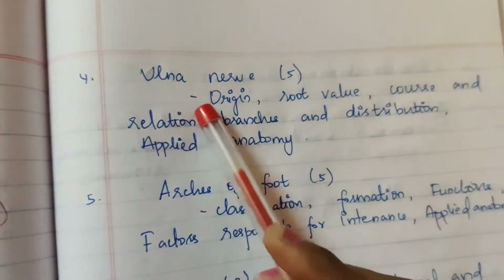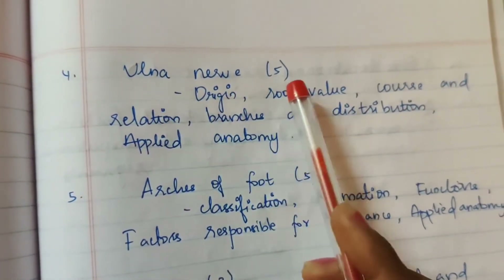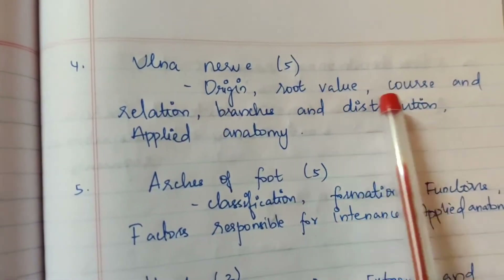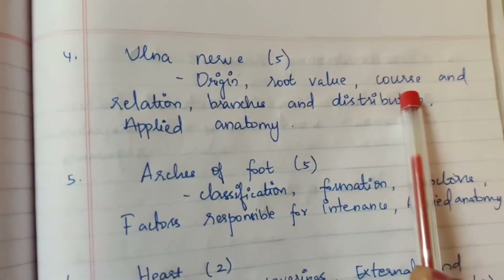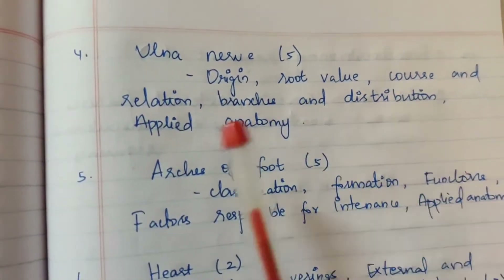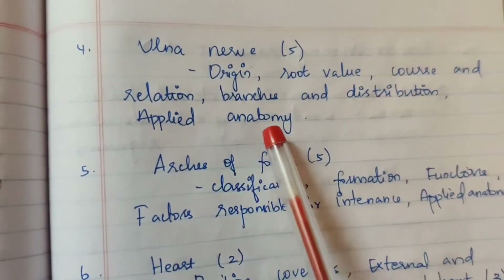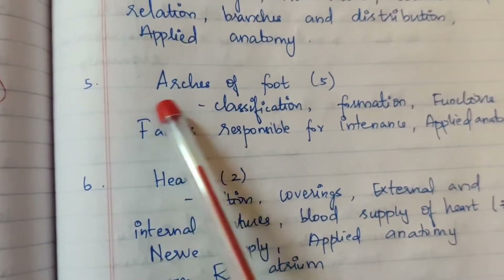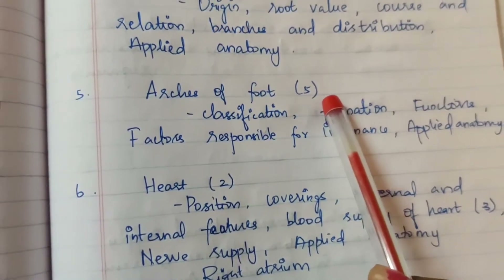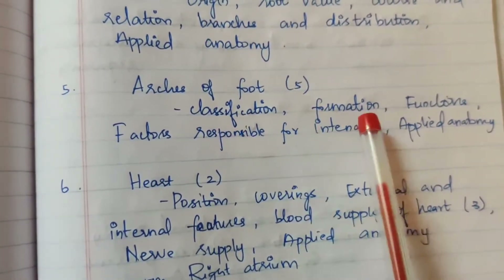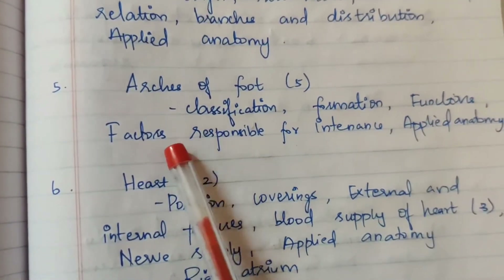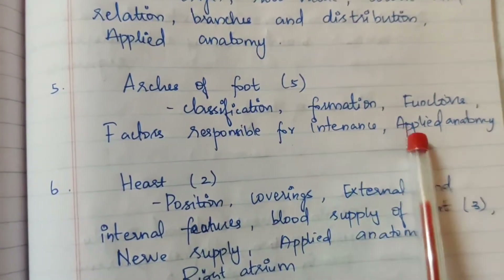Fourth question: ulnar nerve — asked 5 times for 15 marks. Subtopics: origin, root value, course and relations, branches and distribution, and applied anatomy. Fifth question: arches of foot — asked 5 times. Subtopics: classification, formation, function, and factors responsible for maintenance.